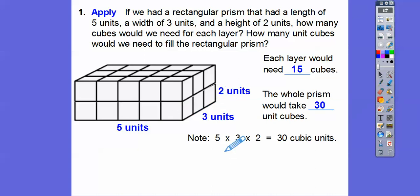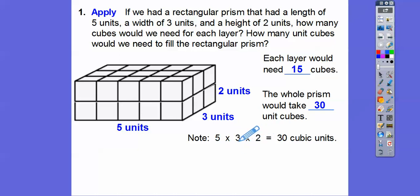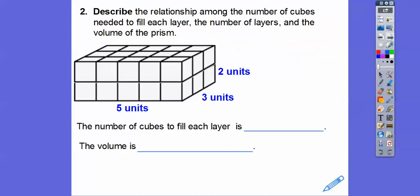Five times three times two is 30, since five times three is 15 and fifteen times two is 30. Or we can use the commutative property of multiplication — like commuting to work — and rearrange: five times two is ten, and ten times three is 30. Picking compatible numbers like ten makes the multiplication easier.